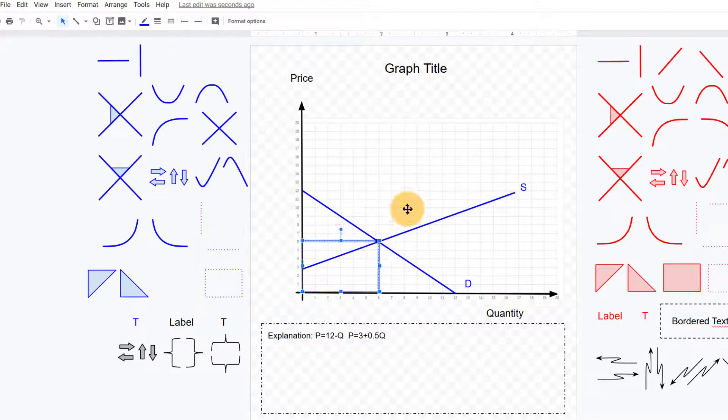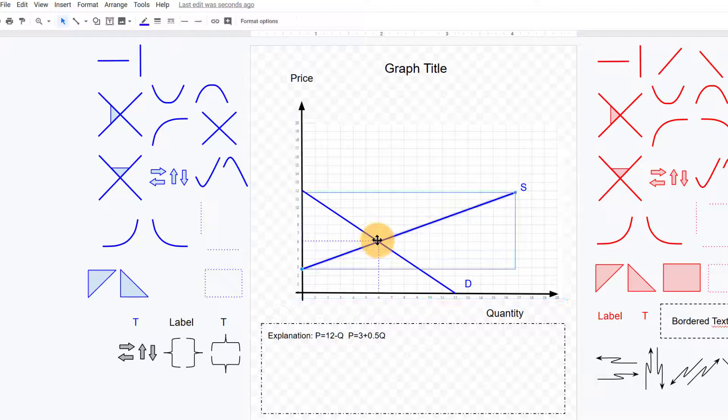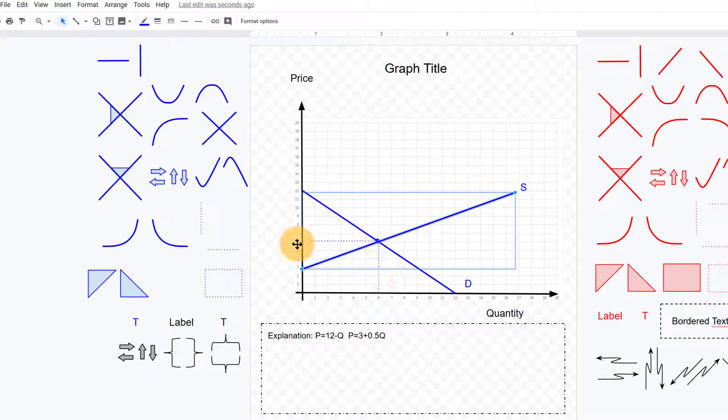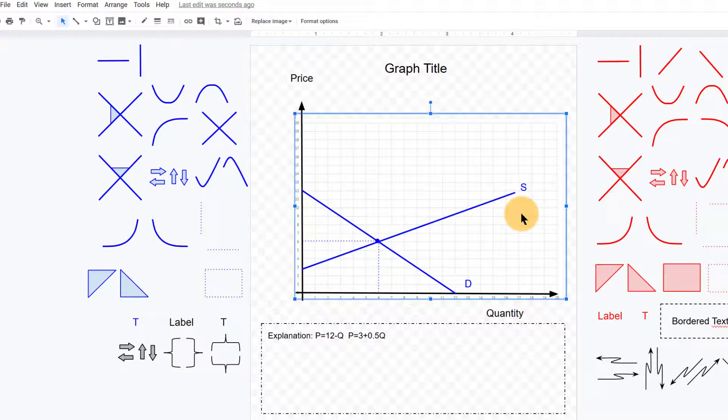So just play around dragging and clicking these tools. So looks like our equilibrium price and quantity would be price of about six dollars, quantity about six units here. And suppose you had a question where you were asked to show an increase in demand.